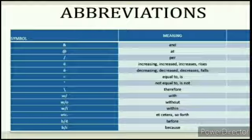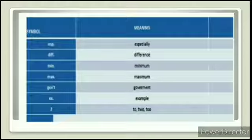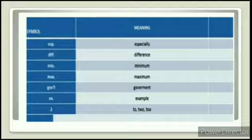Let's see which abbreviations you can use in making notes. For example, the symbol for 'and', 'add', 'per', 'therefore', 'without', 'before', 'because' — these are all symbols you can use. Words like 'especially' can be shortened to 'esp.', 'difference', 'minimum' to 'min', 'maximum', 'government', 'example' — you can make abbreviations of these words. Using symbols and abbreviations in making notes will make your notes very short and concise.